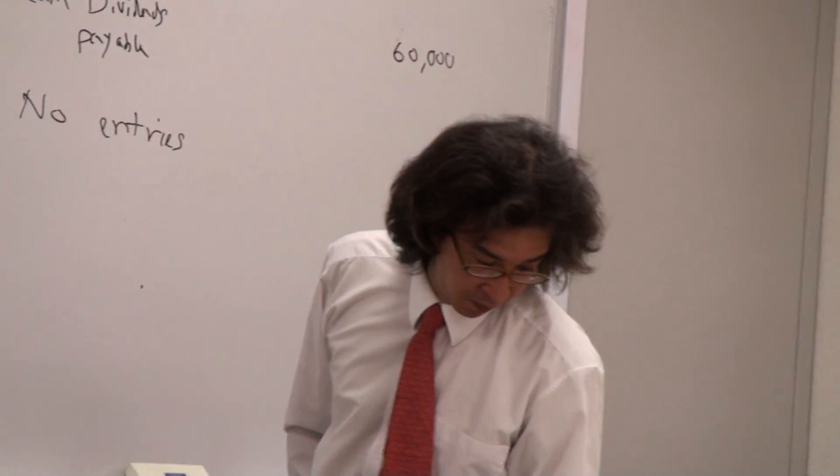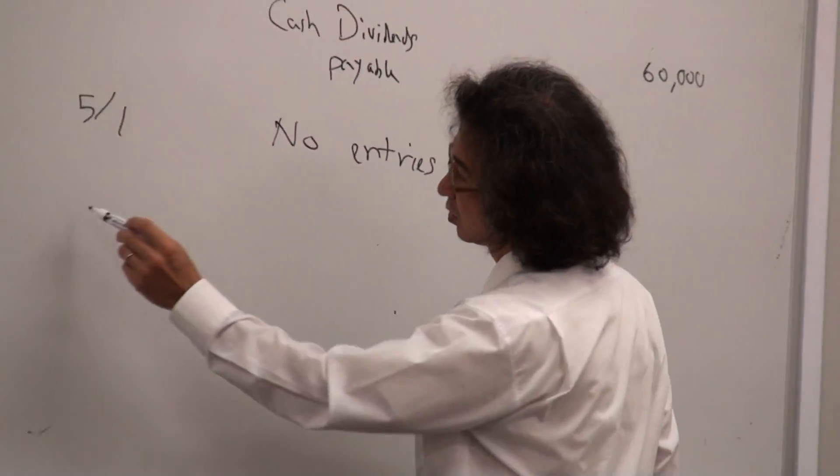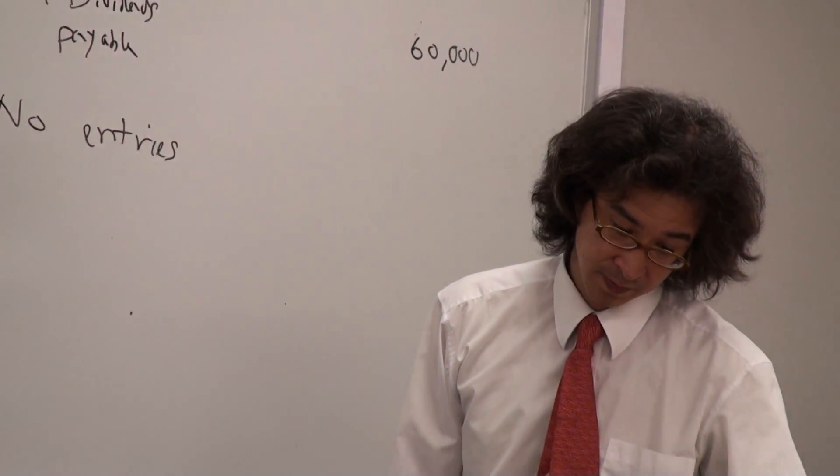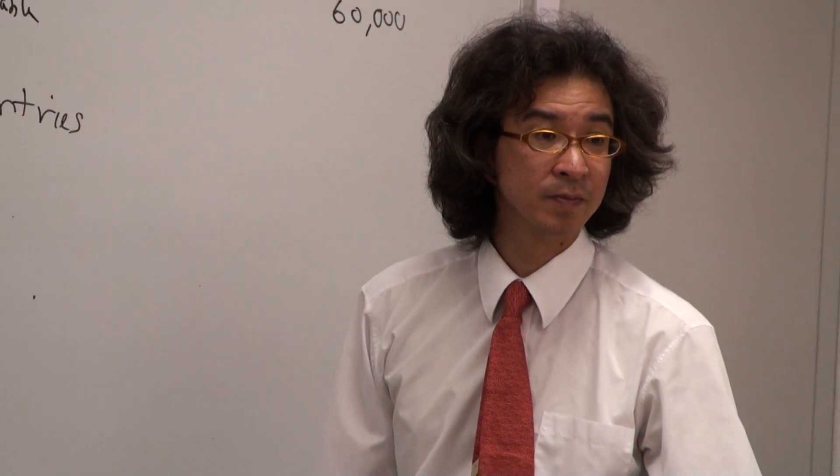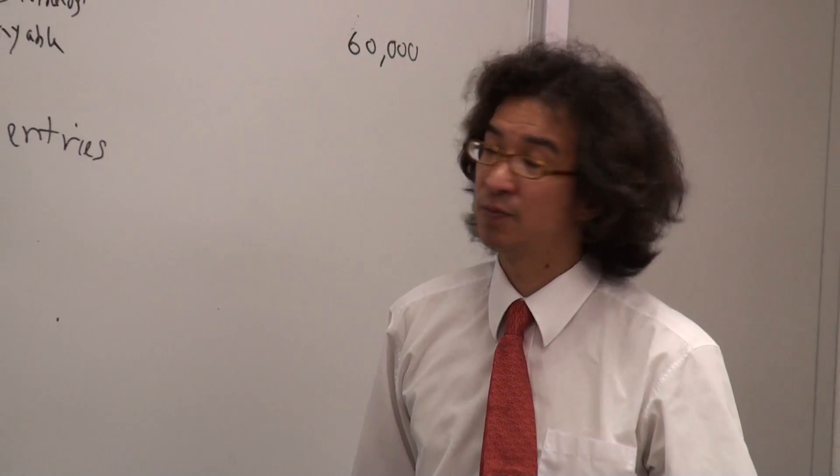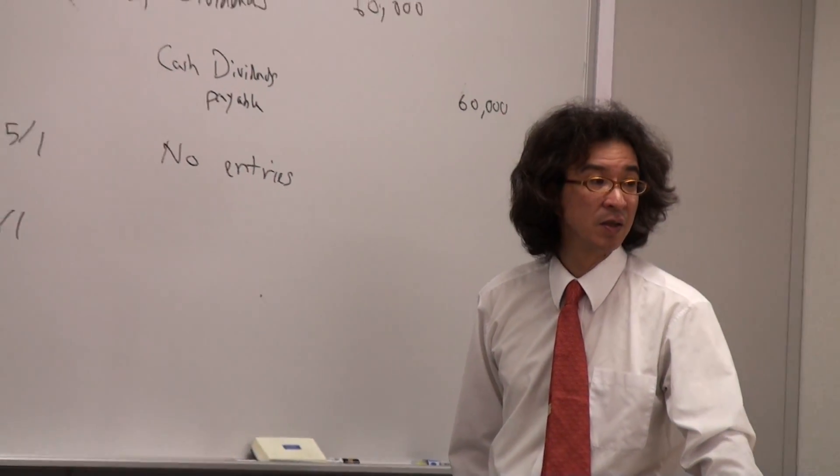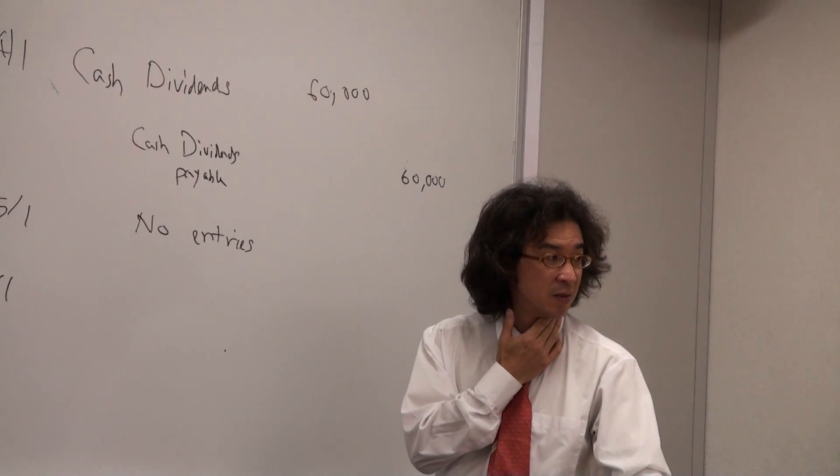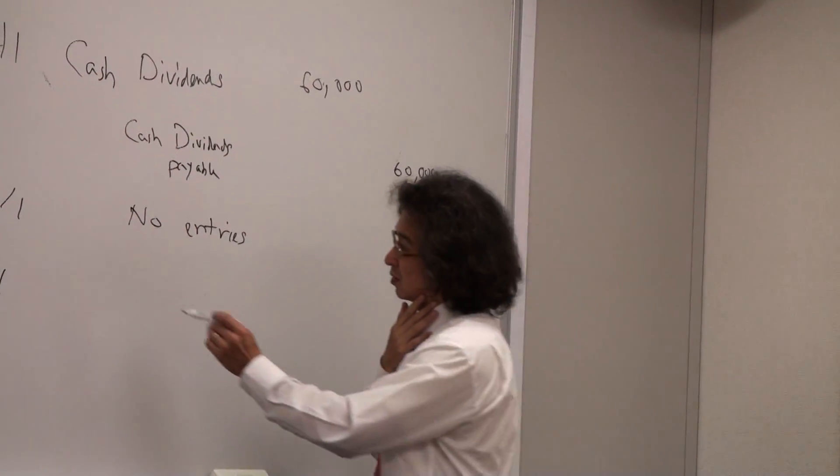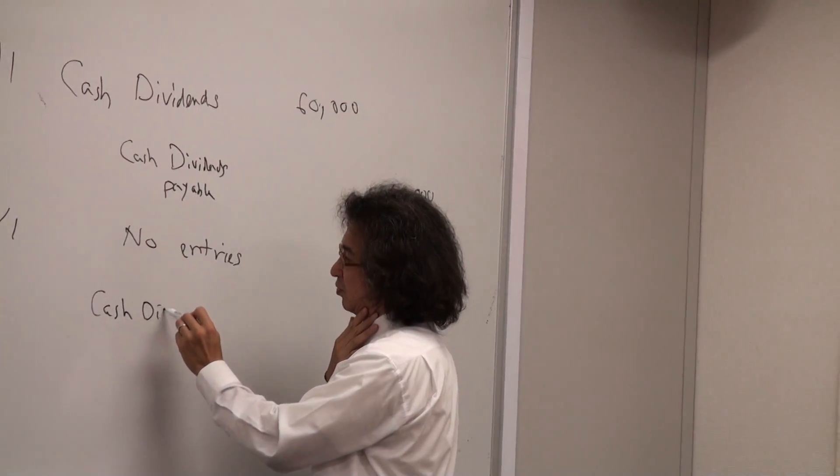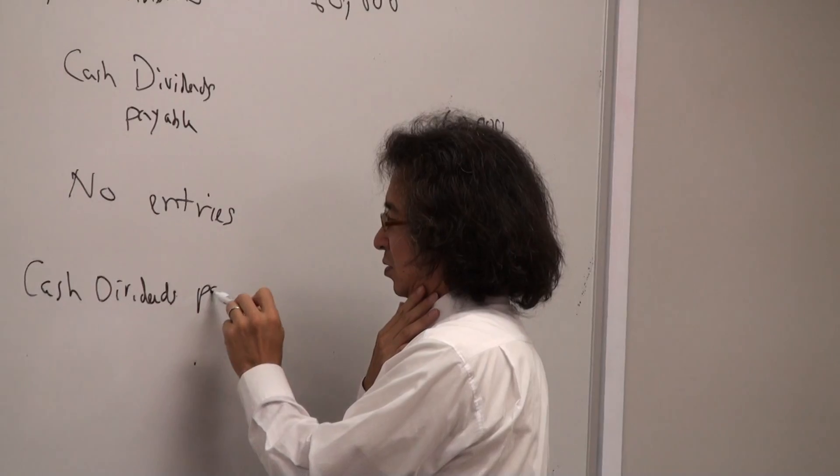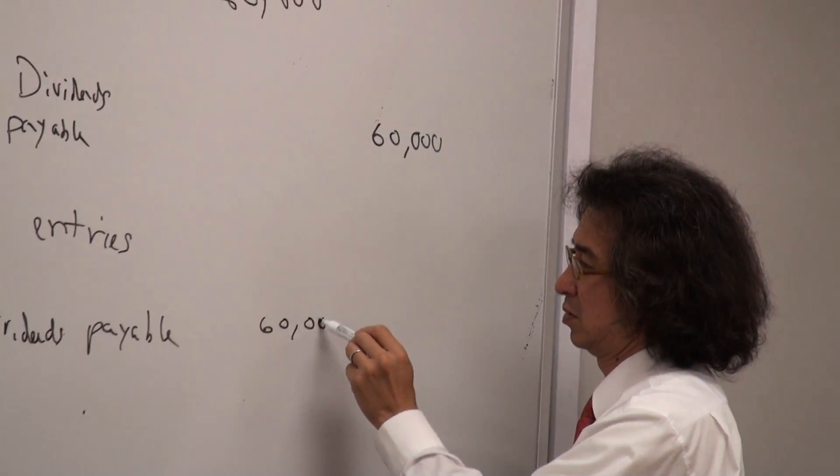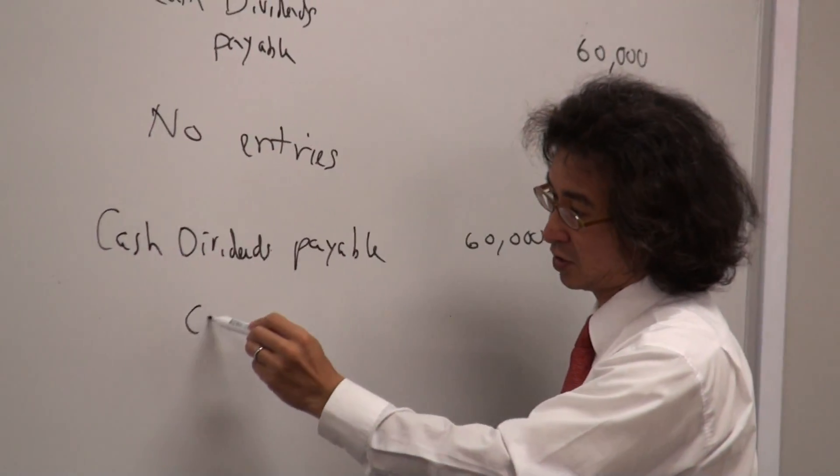When dividends are paid on June 1st, what happened? What happened on June 1st? Cash dividends payable, cash dividends payable, and then cash, right.